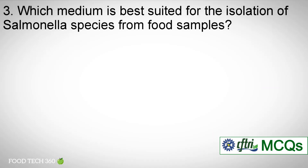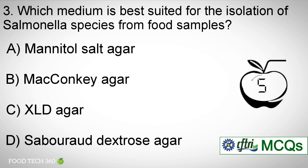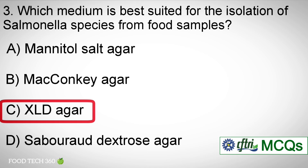Question number 3. Which medium is best suited for the isolation of Salmonella species from food samples? Options: A. Mannitol salt agar, B. MacConkey agar, C. Hektoen Enteric agar, D. Sabouraud dextrose agar. Correct answer: C. Hektoen Enteric agar.